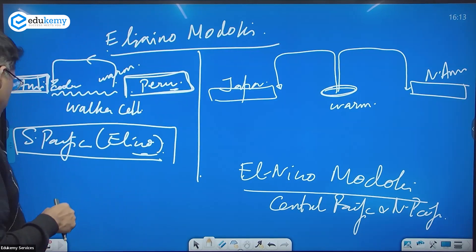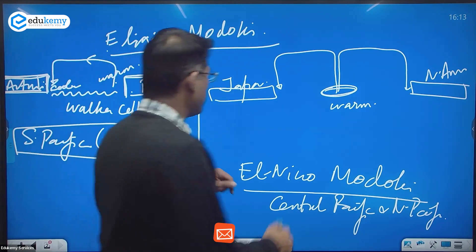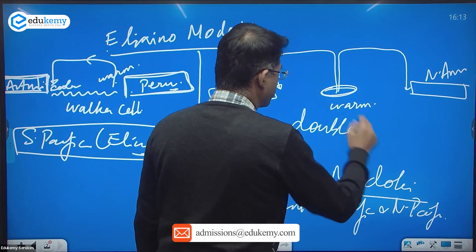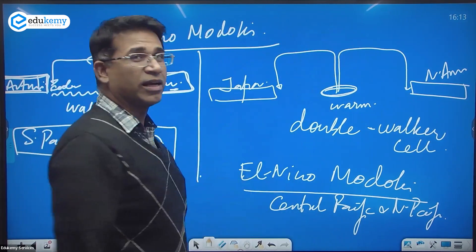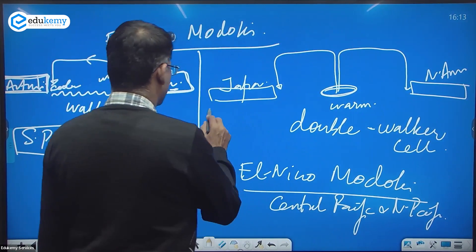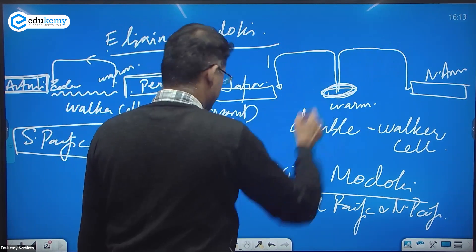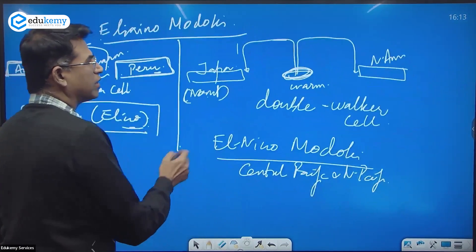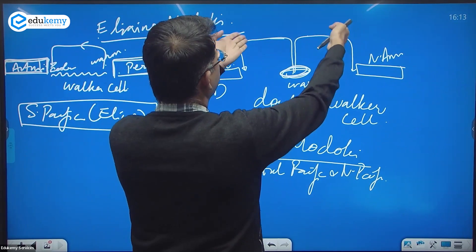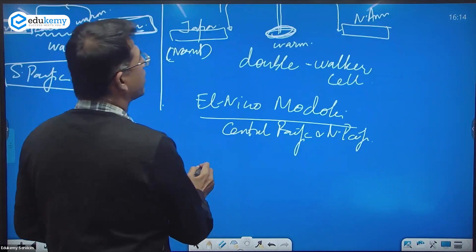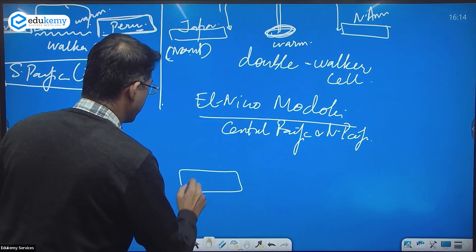In El Niño, there is a reversal — it reverses like this. This is what we call the double Walker cell. So in normal El Niño, warm air is rising and sinking; but in El Niño Modoki, this gets reversed — a double Walker cell with air rising from the center and sinking on both sides.